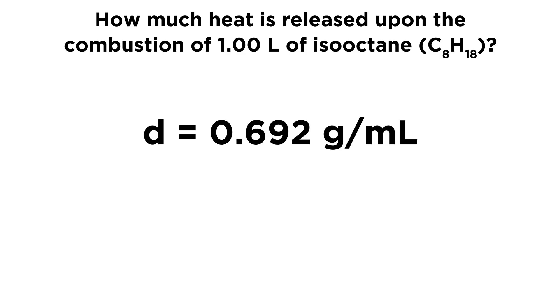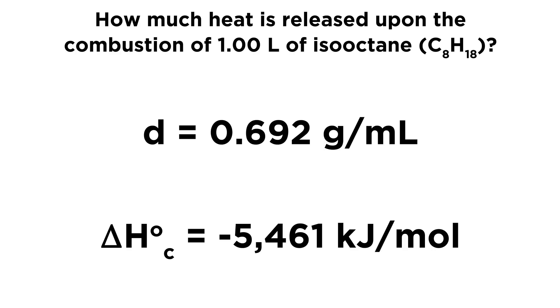Now in order to answer this question, we will need to know that the density of isooctane is 0.692 grams per milliliter. And we also need to know that the delta H of combustion for isooctane is negative 5,461 kilojoules per mole. So this is all the data you need. Go ahead and give this a try.